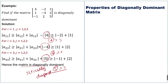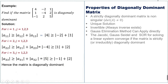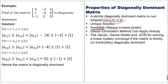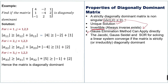Now we discuss the properties of the diagonally dominant matrix. A strictly diagonally dominant matrix is non-singular, meaning its determinant is not zero. It has a unique solution, and it is invertible — its inverse always exists. Gauss elimination can be applied directly without pivoting, and iterative methods for solving linear systems converge if the matrix is strictly diagonally dominant or irreducible.